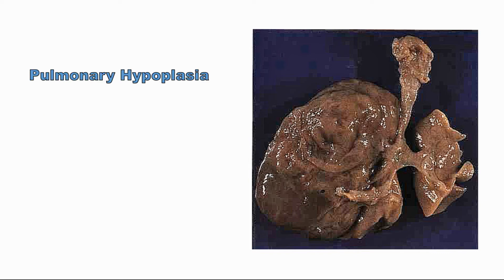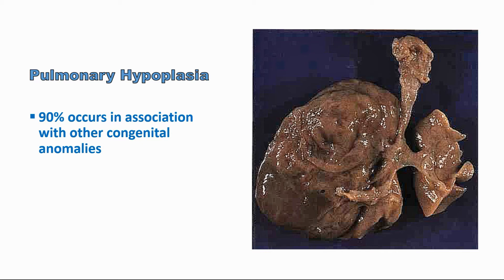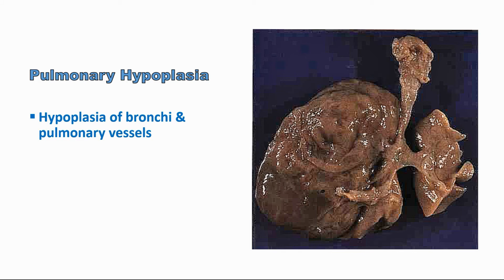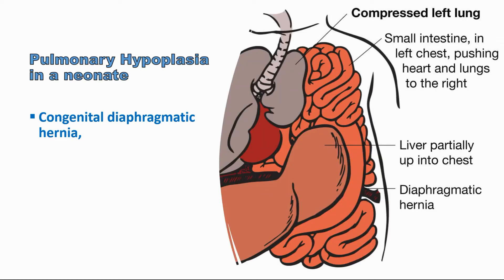Pulmonary hypoplasia of the lung is the most common congenital lesion of the lung. It is found in 10% of neonatal autopsies, and 90% of cases are associated with other congenital anomalies, such as hypoplasia of bronchi and pulmonary vessels or congenital diaphragmatic hernia. In congenital diaphragmatic hernia, the abdominal contents enter into the thoracic cavity and compress the lungs, preventing normal development.